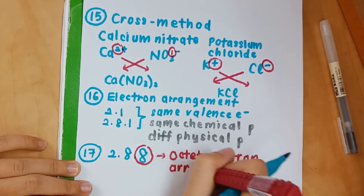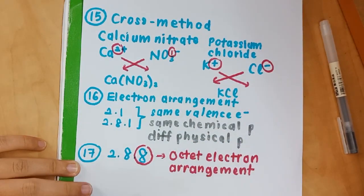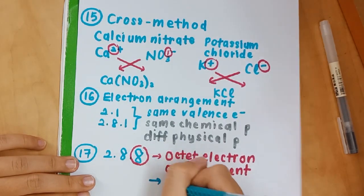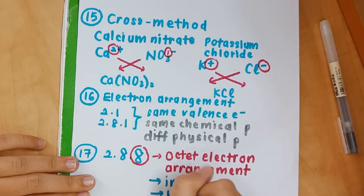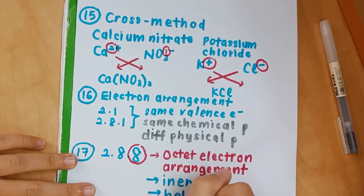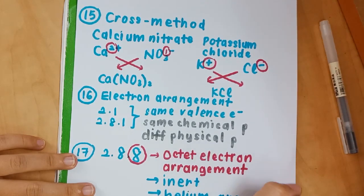Number 17: 2,8,8. If the electron arrangement is 2,8,8, meaning the last number is 8, then it's octet and it's inert. Examples are helium and argon gas.